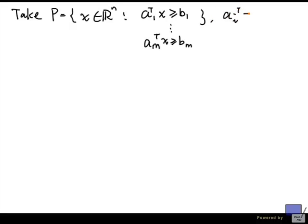Again, Ai transpose is non-zero for all i equals 1 up to m. So how do we recognize extreme points of this at P?